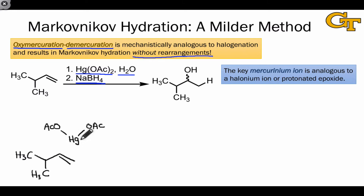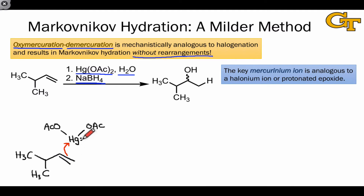This mercury atom is quite electrophilic, but it also bears a pair of electrons that can be donated back to the alkene. Mercury is an interesting transition metal in that it's fairly far to the right on the periodic table, and so while it can accept electrons as many metals can, it's also relatively rich in electrons, meaning it can donate a pair of electrons back to the alkene.